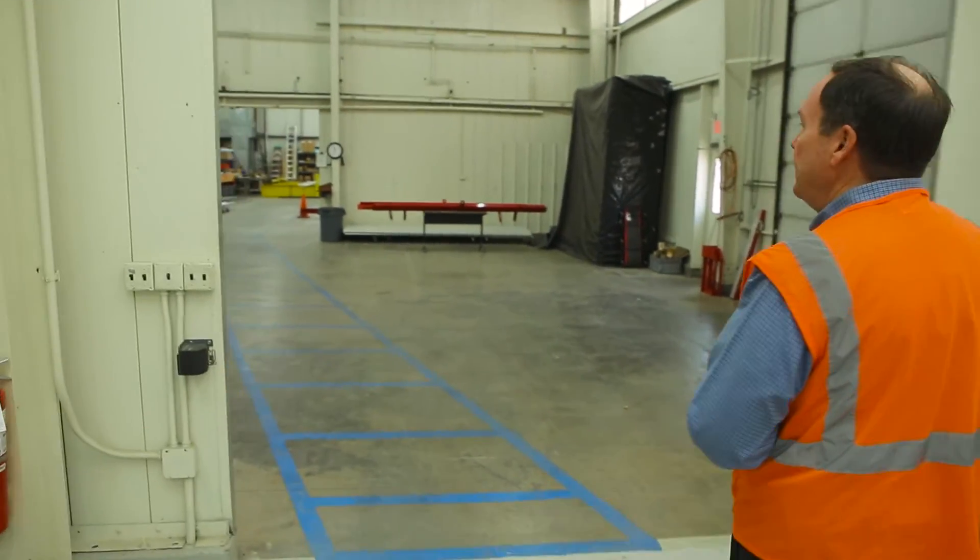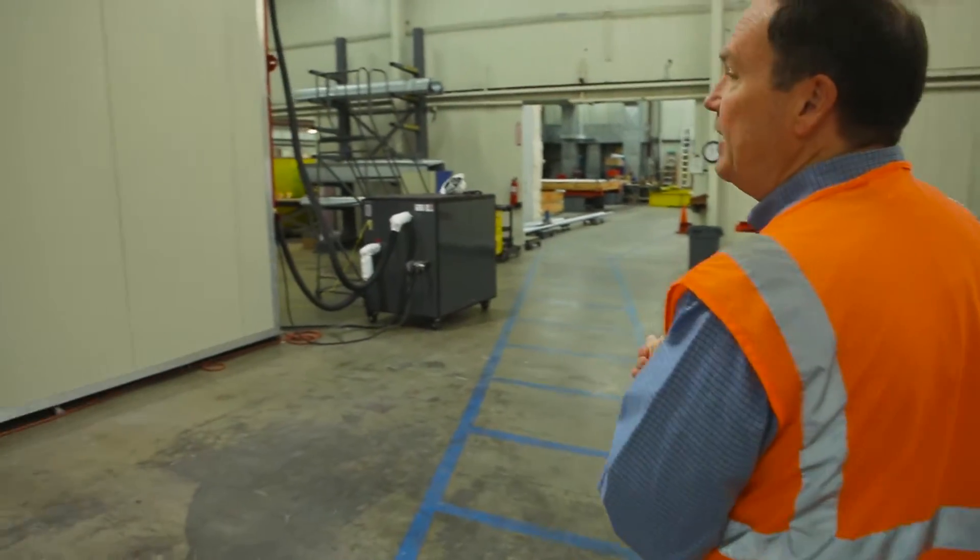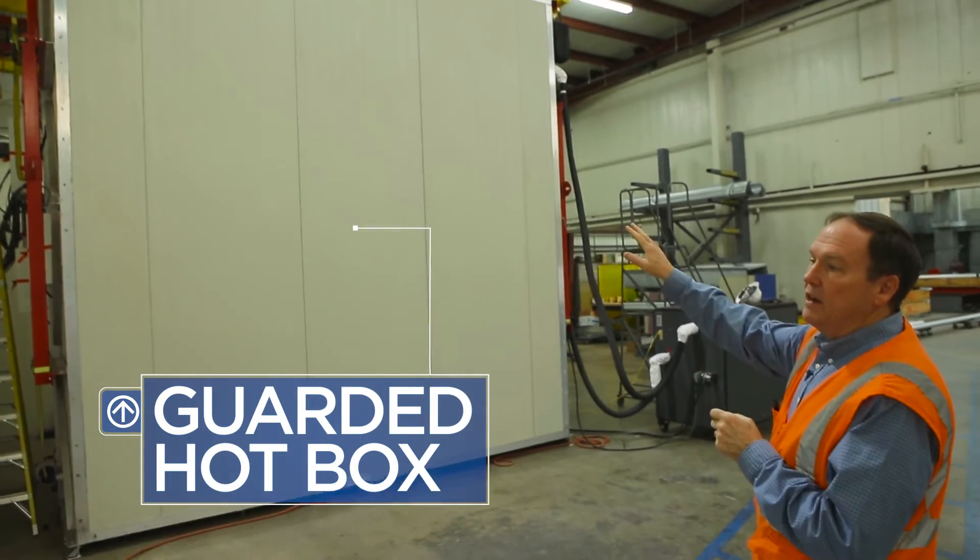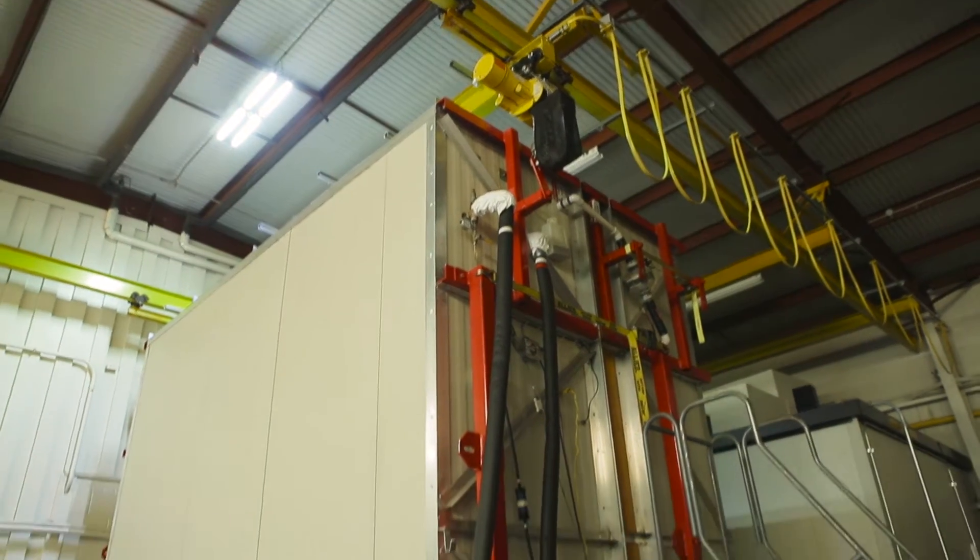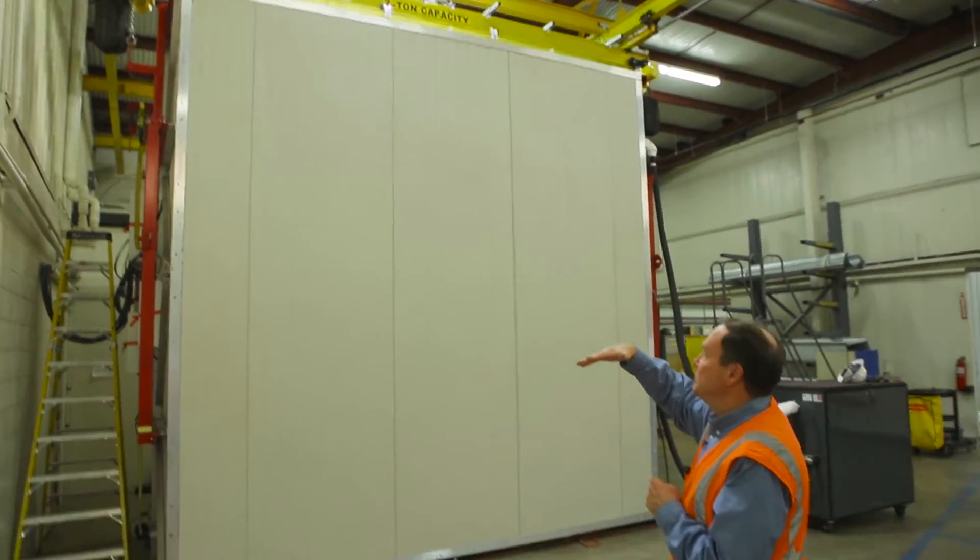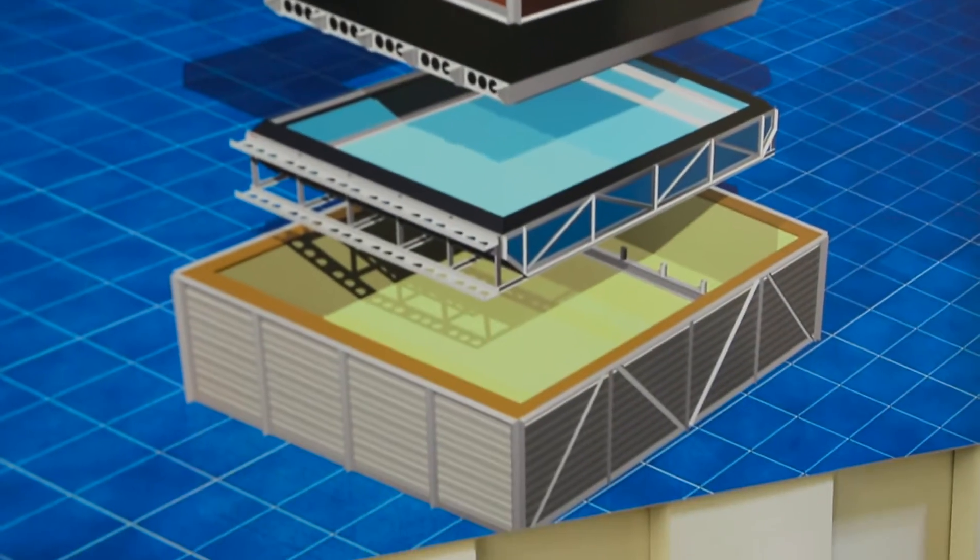This is the environmental test area. Here's the guarded hotbox. This one's 15 foot square and the sample inside of there is actually 8 foot wide by 10 foot high. This whole unit will tilt horizontal for roof system testing and inside of that system will have the samples of the panel.